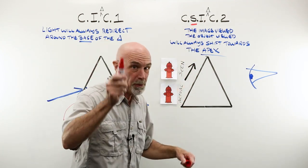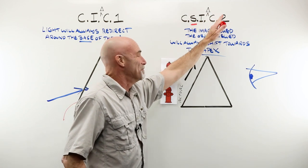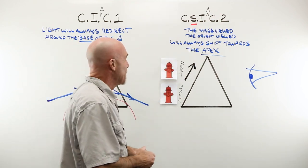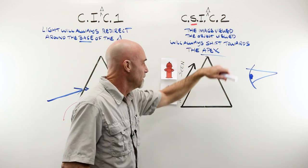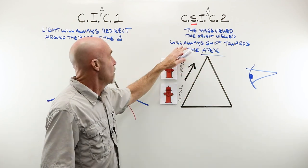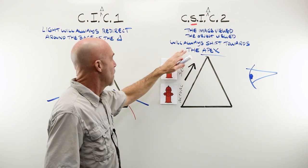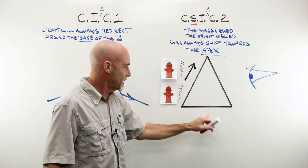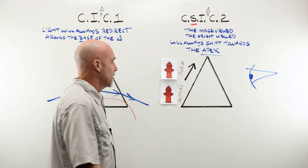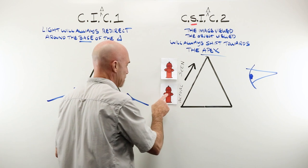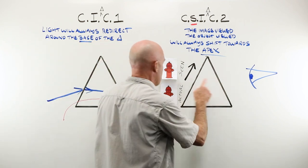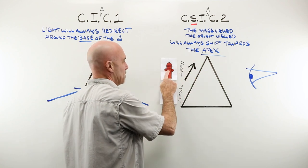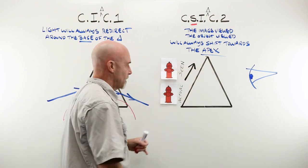Crazy, super important prism concept number two. The image viewed or the object being viewed through a prism will always shift towards the apex. Apex, base. The prism, actual fire hydrant, it will appear, it will shift towards the apex and be seen as being above it.